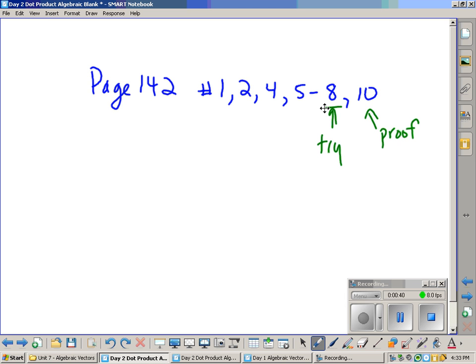One thing that you'll want to recognize is this. So for 1d, it doesn't give you the vectors in component form. It gives it to you like this.